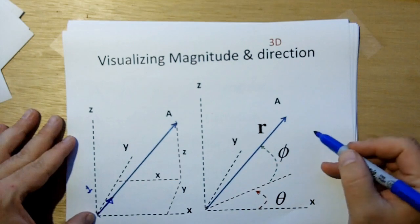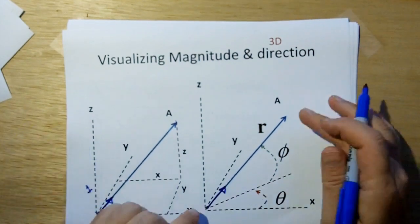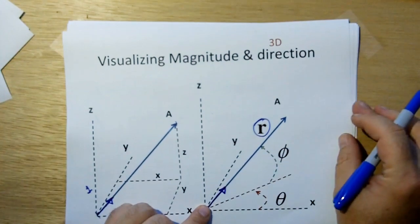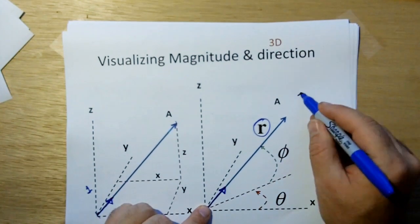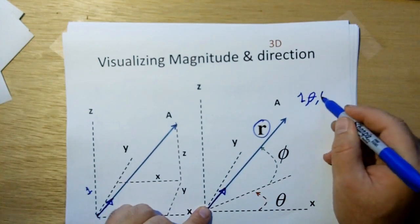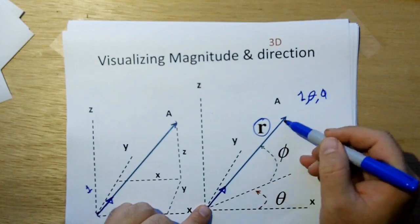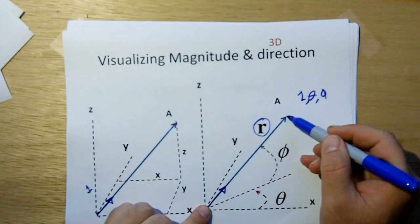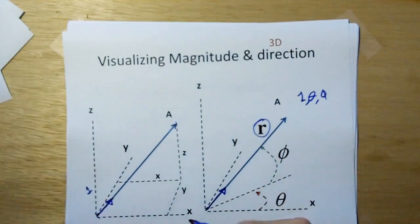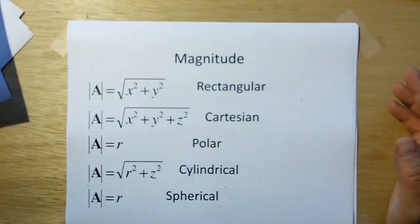In a spherical coordinate system, the same thing applies: your magnitude is still going to be r, and your direction vector is going to be one at angle theta phi — a unit vector in the direction that your vector A is pointing in. This is magnitude and direction: we're breaking a vector up into its two component parts because sometimes it helps us to know that.